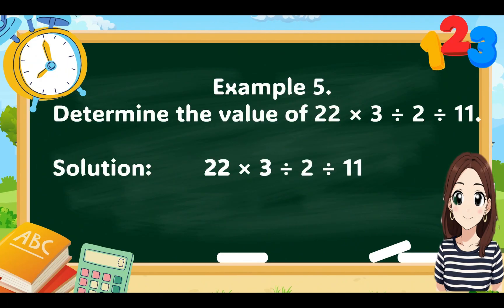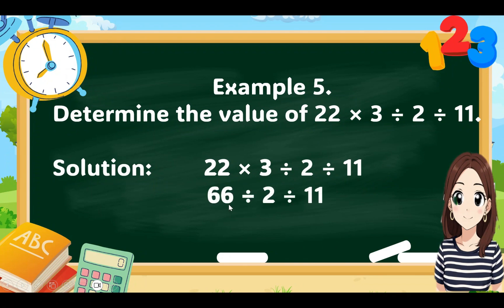Example 5: Determine the value of 22 times 3 divided by 2 divided by 11. According to the rule, whichever operation comes first should be performed first. So 22 times 3 equals 66; then 66 divided by 2 equals 33; then 33 divided by 11 equals 3. The final answer is 3.